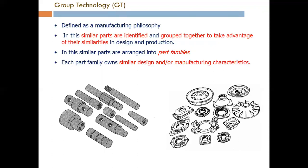We can perform manufacturing operations on the lathe machine for all these parts, as they all have a sort of holes, so we can use the lathe machine and perform different operations. These will come into one kind of part family. On the right side, these are different categories of parts which we can keep in another part family, each with similar design and manufacturing characteristics.